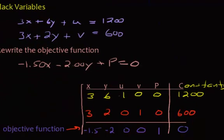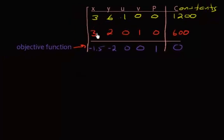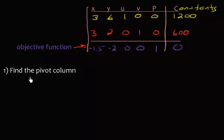Here is our table. We're going to go over the steps on how to find your pivot element — it's pretty much like row reducing, except we're not going to create a diagonal of ones like we did before. I still need to find a pivot element and do row operations. Step one is to find the pivot column.